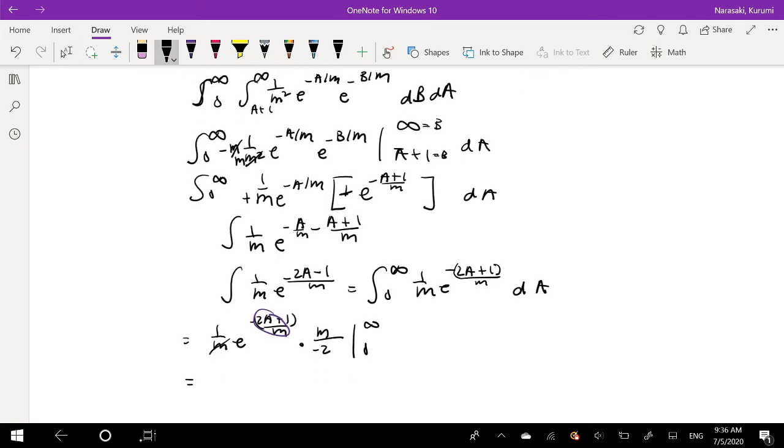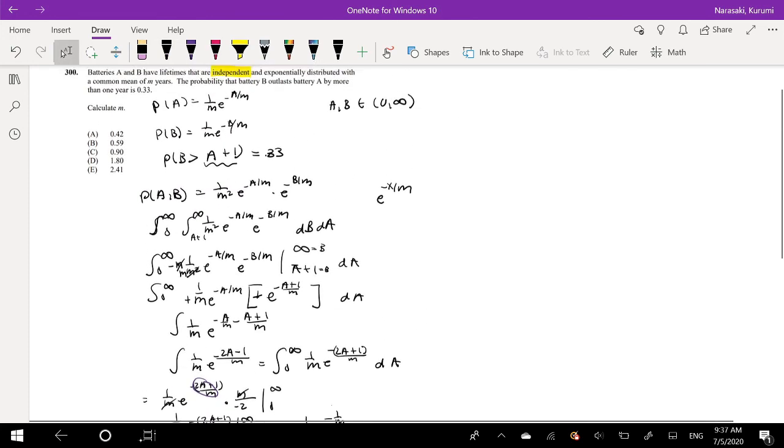Integrating from 0 to infinity. Let me simplify this. The M's cancel out, so it becomes negative 1 over 2, e to the negative 2A plus 1 over M. Integrating from 0 to infinity, which is equal to negative 1 half e to the negative. Anything to the negative infinity is just 0, so the first part is just 0. Minus, minus makes positive. E to the negative, plugging in 0 for A just gives you 1 over M. And we know that this is equal to 0.33.